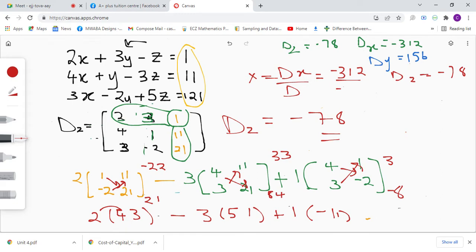Minus negative 78. So 312 divided by 78, we're going to get 4. So x equals 4.